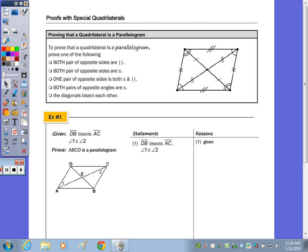Do I want to show that both pair of opposite sides are parallel? Both pair of opposite sides are congruent? One pair of opposite sides is both congruent and parallel? Both pair of opposite angles are congruent, or the diagonals bisect each other?